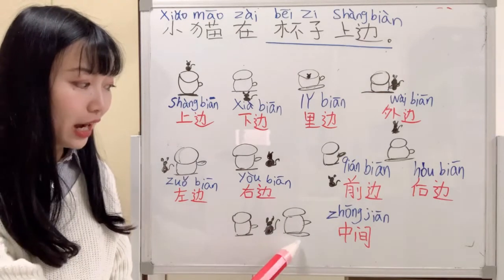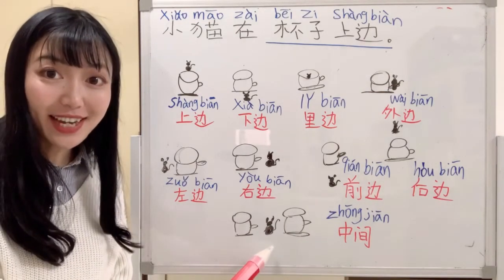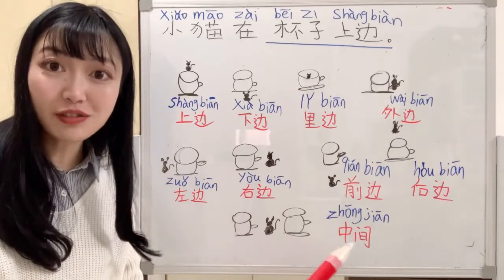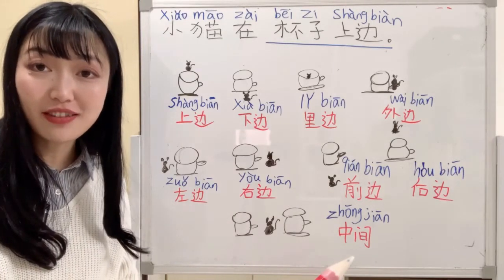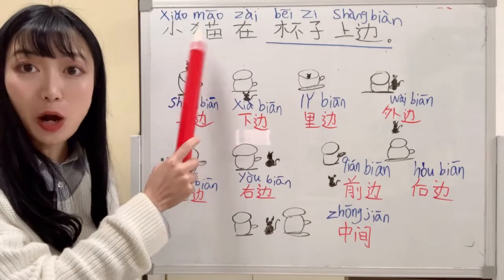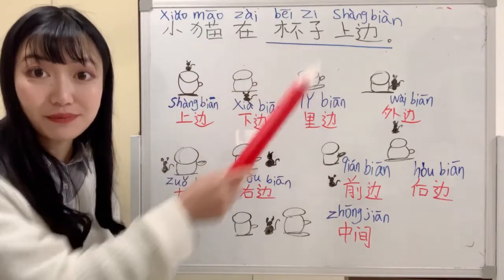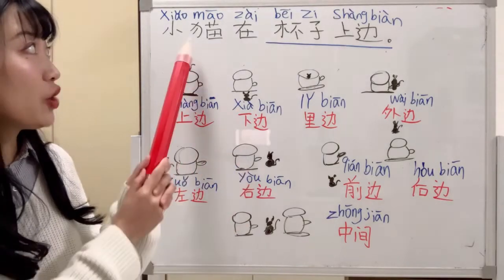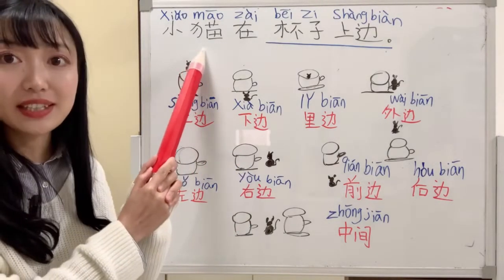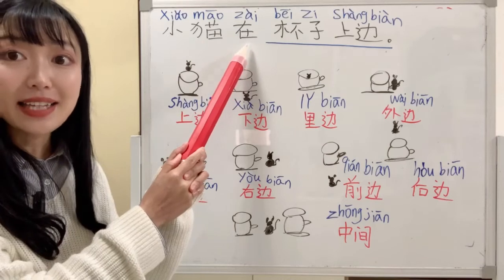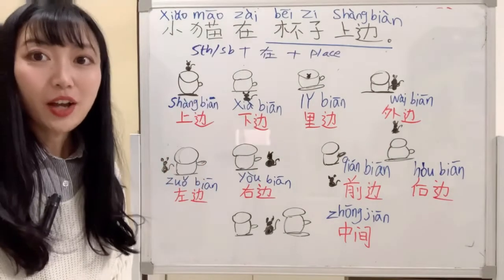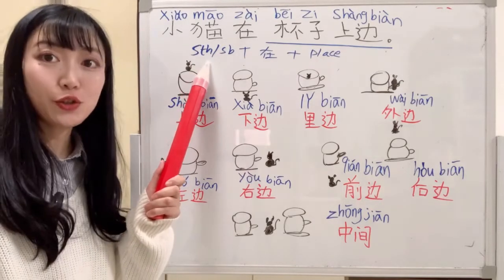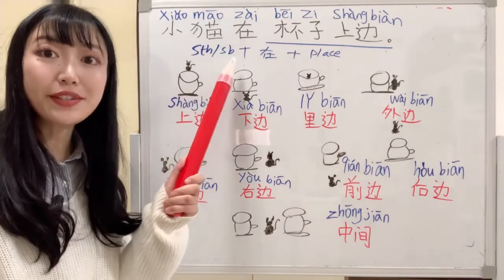If there are two cups, so the cat is between these two cups, we can say 中间. 小猫在杯子中间. 中间 means between or in the middle. It's very easy.